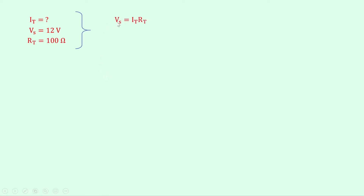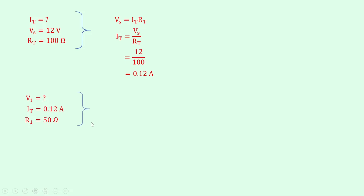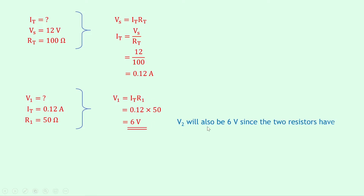To find the total current IT: VS is 12 volts and RT is 100 ohms, so VS equals IT times RT, rearranging gives IT equals VS over RT equals 12 over 100, which equals 0.12 amps. To find V1: V1 equals IT times R1 equals 0.12 times 50, which gives 6 volts across R1. V2 will also be 6 volts since both resistors have the same value.